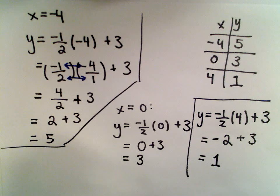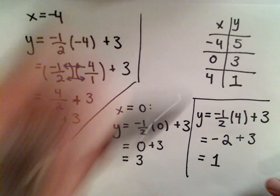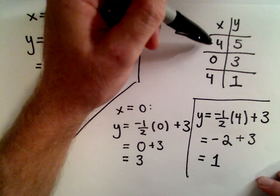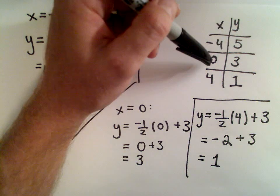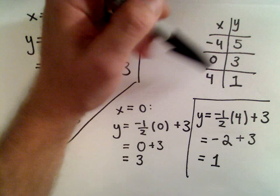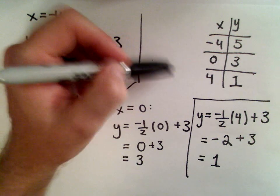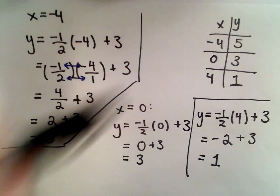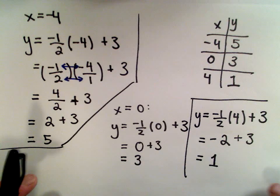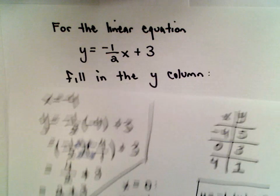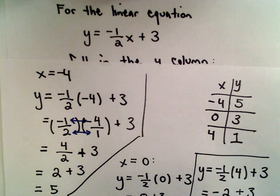So substituting in x equals positive 4 gives a y value of positive 1. And that's it — we're finished. If you wanted to graph that original line, you could pick any two of these three points: negative 4 comma 5, 0 comma 3, or 4 comma 1. Put the dots on the graph, play connect the dots, and you would have the graph of the original linear equation y equals negative 1 half x plus 3.